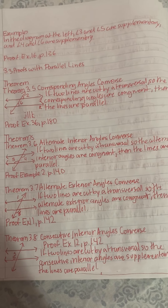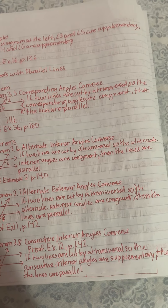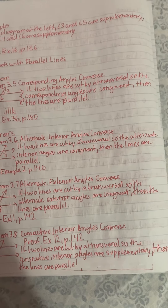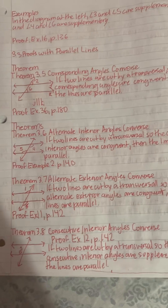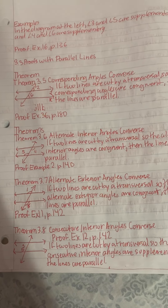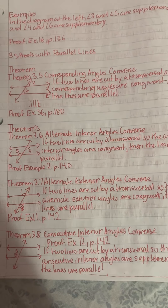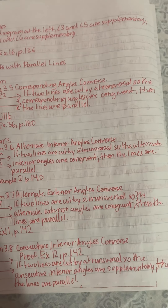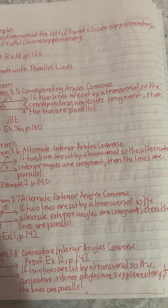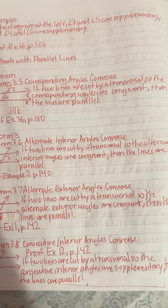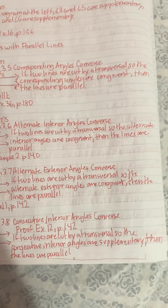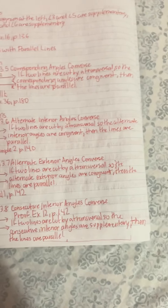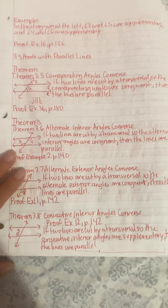Theorem 3.7, Alternate Exterior Angles Converse: If two lines are cut by a transversal so that the alternate exterior angles are congruent, then the lines are parallel. Proof. Example: 11P142. Theorem 3.8, Consecutive Interior Angles Converse: If two lines are cut by a transversal so that consecutive interior angles are supplementary, then the lines are parallel. Proof. Example: 12P142.